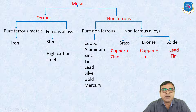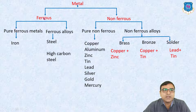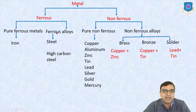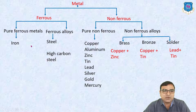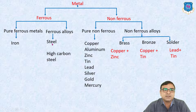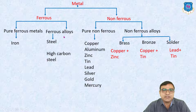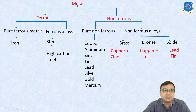Generally, metals are classified into ferrous and non-ferrous metals. Ferrous metals are those in which iron is the main content. Ferrous metals are further divided into pure ferrous metals and ferrous alloys. In pure ferrous metals, the example is iron. Ferrous alloys means iron is combined with other elements like carbon and phosphorus, then the product becomes a ferrous alloy.